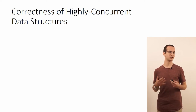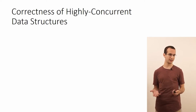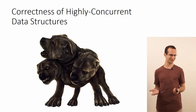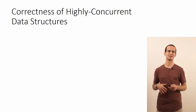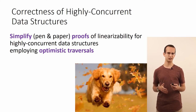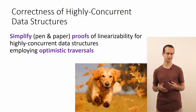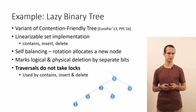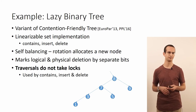And the problem is, this is really, really, really hard. There are so many things happening at once that you need to think about. So what we want to do is to simplify pen and paper proofs of the linearizability of highly concurrent data structures employing optimistic traversals. Consider, as an example, a binary tree with lazy synchronization, here based on a contention-friendly tree.